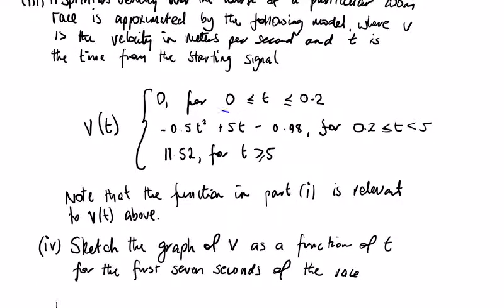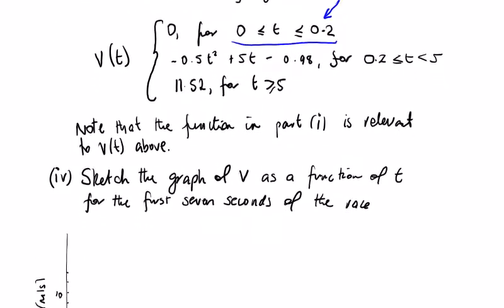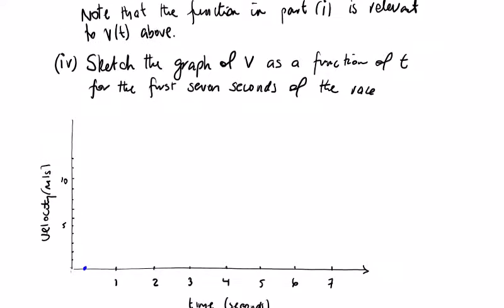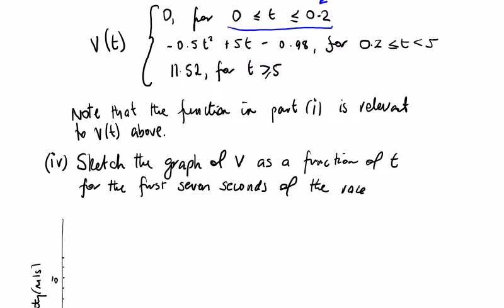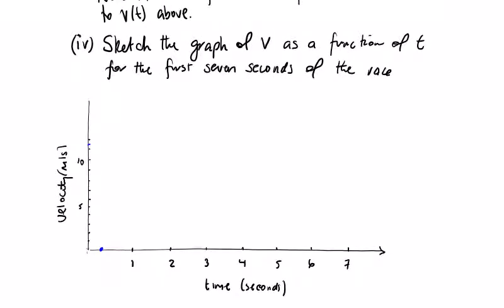This is why t starts at 0: at the start of a race, the starter's gun goes off and there's no velocity. Sprinters aren't allowed to leave the blocks before 0.2 seconds have elapsed. We're asked to sketch the function: it starts at t = 0.2, rises to maximum velocity at 5 seconds (approximately 11.52), then levels off from there.